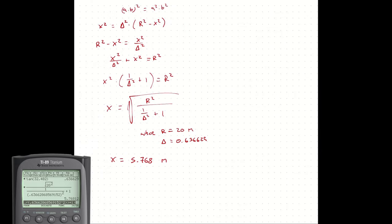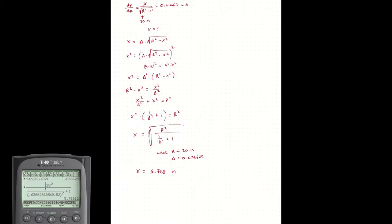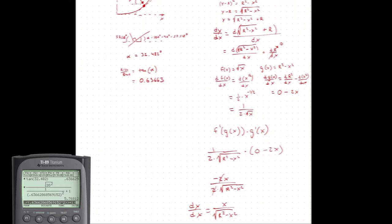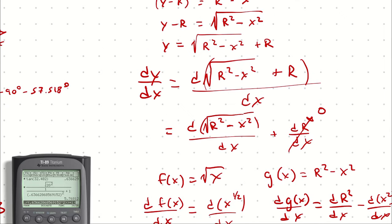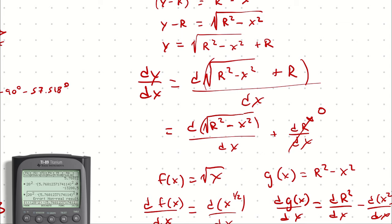So the center of pressure is applied at a position 5.768 meters in. The y-position is found by evaluating the circle function: y equals the square root of r squared minus x squared plus r. Using the correct sign for the bottom half of the circle gives approximately 0.849 meters.